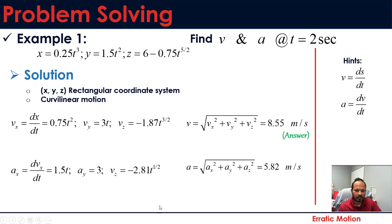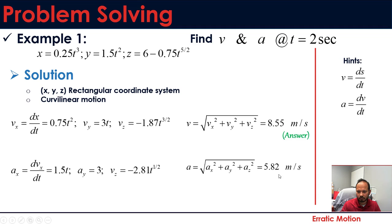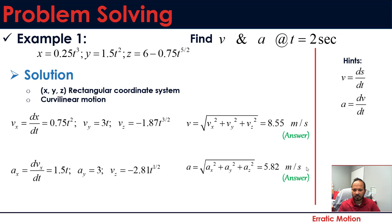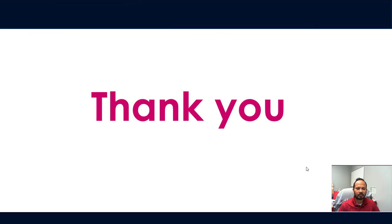Similarly, acceleration is found by taking the second derivative of the position functions or the first derivative of the velocity components, giving ax, ay, and az. Plugging in t = 2 and taking the square root gives the acceleration magnitude: 5.82 meters per second squared. We will solve more problems in class. If you have any questions, comment or ask in class. See you in the next video — thank you.